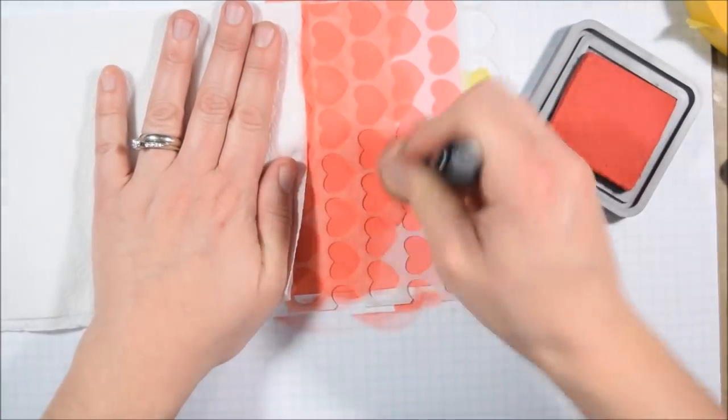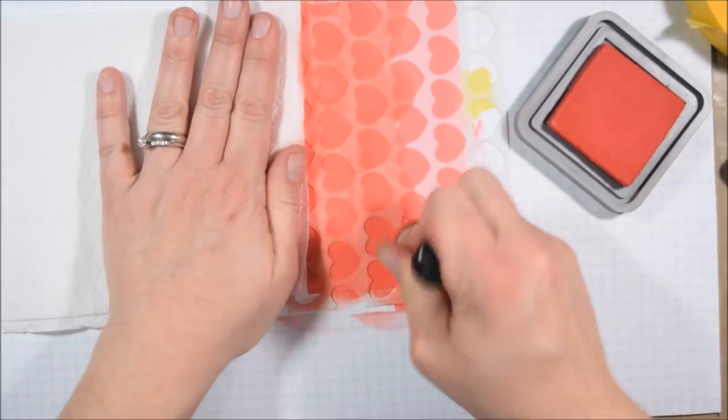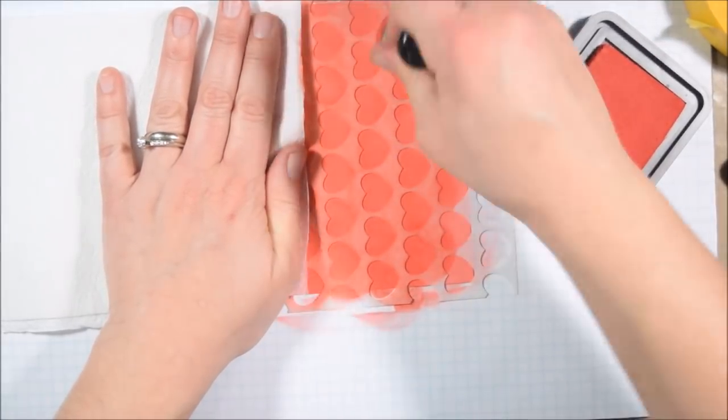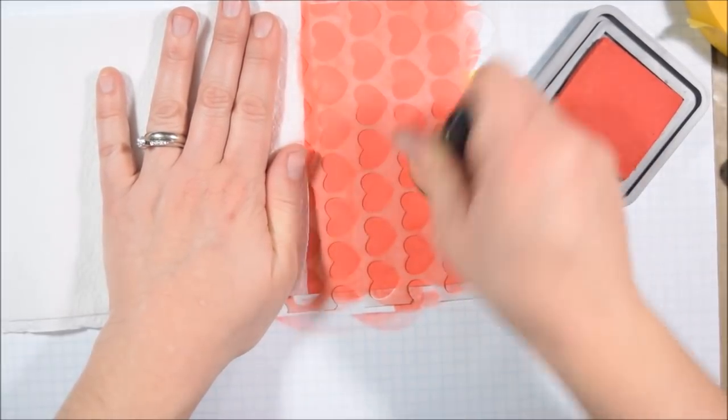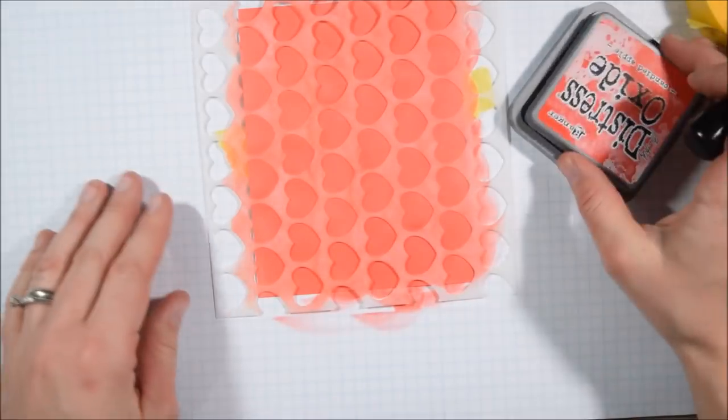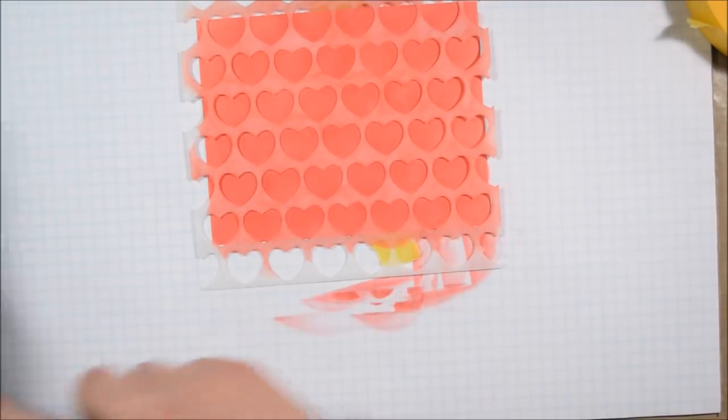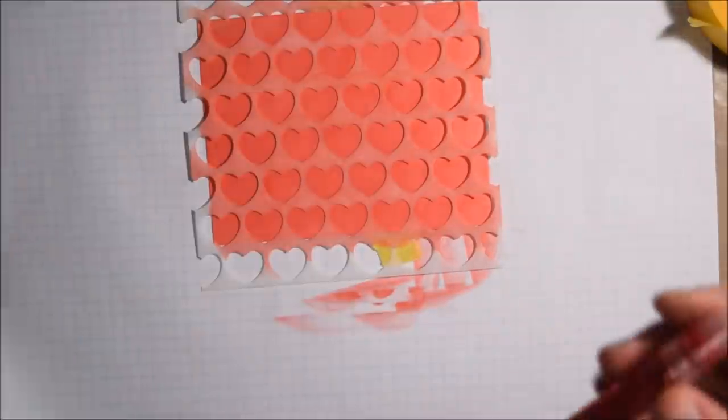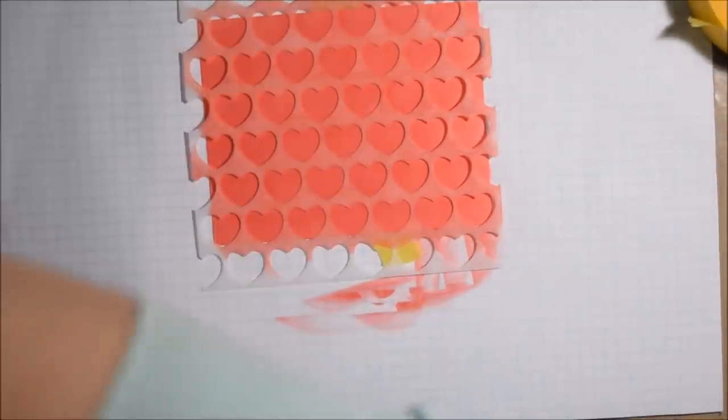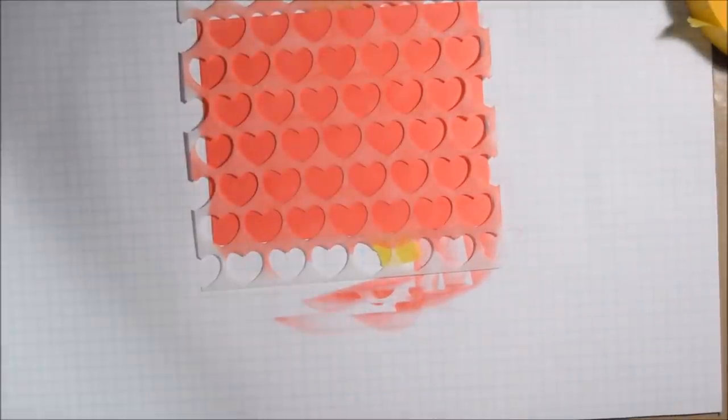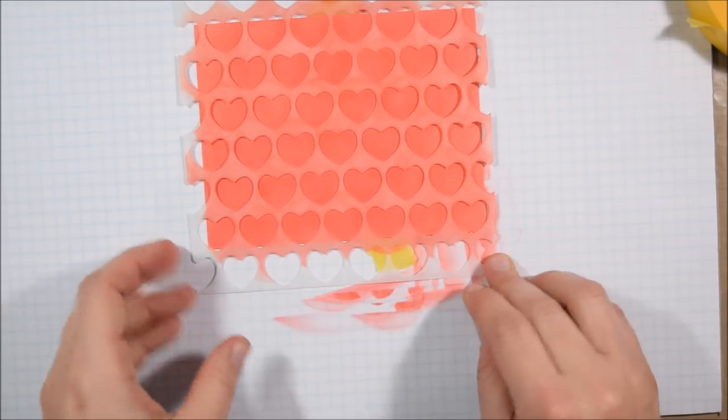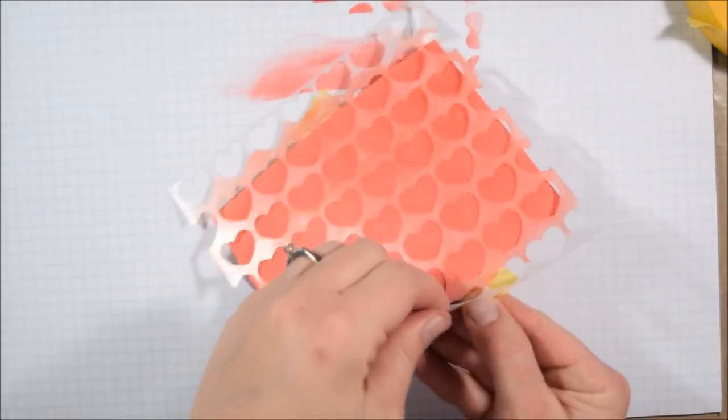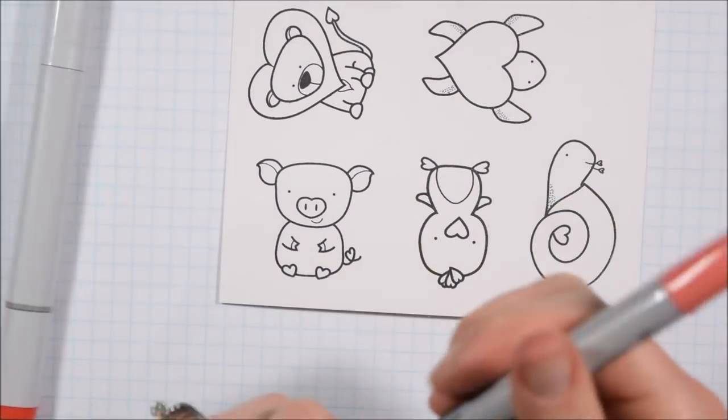I'm going to use a different color of distress ink. I believe this is Fired Brick, or maybe Barn Door. It's one of the Red Distress Oxide inks. I'll have links to all the products in the video description. I have a hard time remembering which colors are in Oxide and which ones aren't yet. I just laid it through so that it creates a tone on tone look. I thought about adding some shimmer spray because the Distress Oxide would react with the spray, but I decided I wanted to keep it a bit more clean and simple.